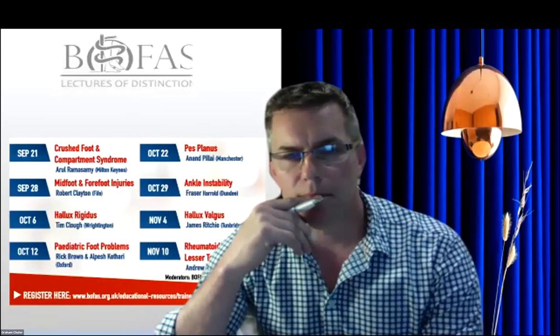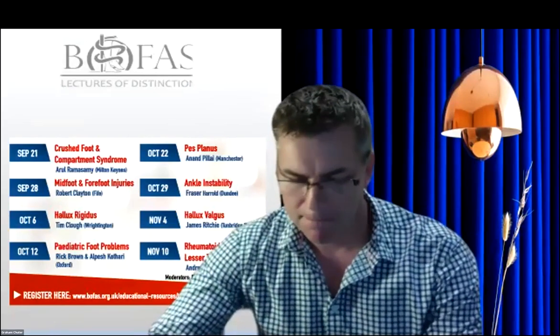There's a question from Justin: what is the total time in Ponsetti casting before tenotomy? This will vary depending on how responsive the foot is to the casting, but the average is five weeks. Sometimes you can adopt an accelerated regime if the foot and circumstances allow, and sometimes you may need a few more weeks. After the tenotomy, three more weeks in cast — and depending on the age of the child they can grow quite rapidly, so we would often change that cast halfway through at three weeks just so it doesn't get too tight.